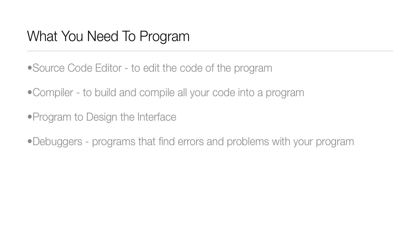Let's get into the lesson. What you need to program — there are actually a few different programs you need to make a program. The first is a source code editor, which allows you to add and edit the code of your program. Then you need a compiler to build and compile all the code into a usable program. You also need a program to design the interface — what the user actually sees and interacts with. Finally, you need debuggers, which find errors and problems and help you fix them.